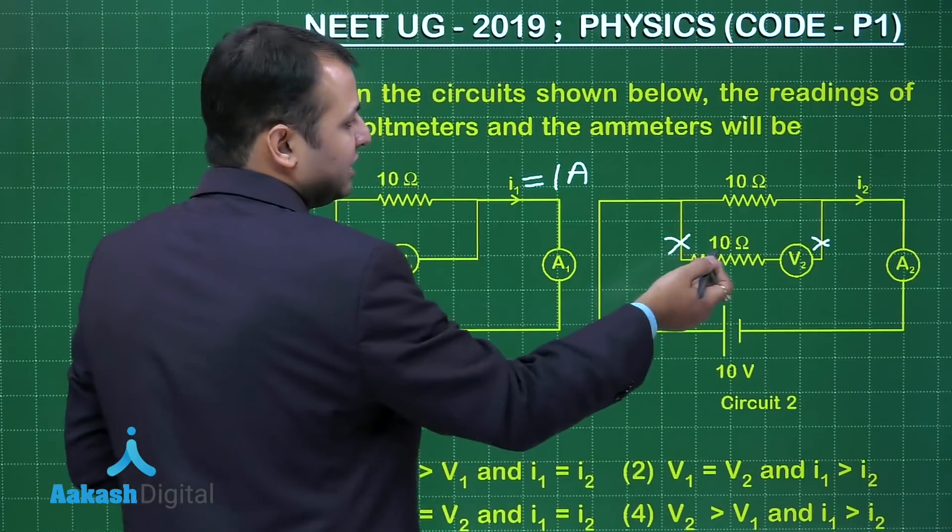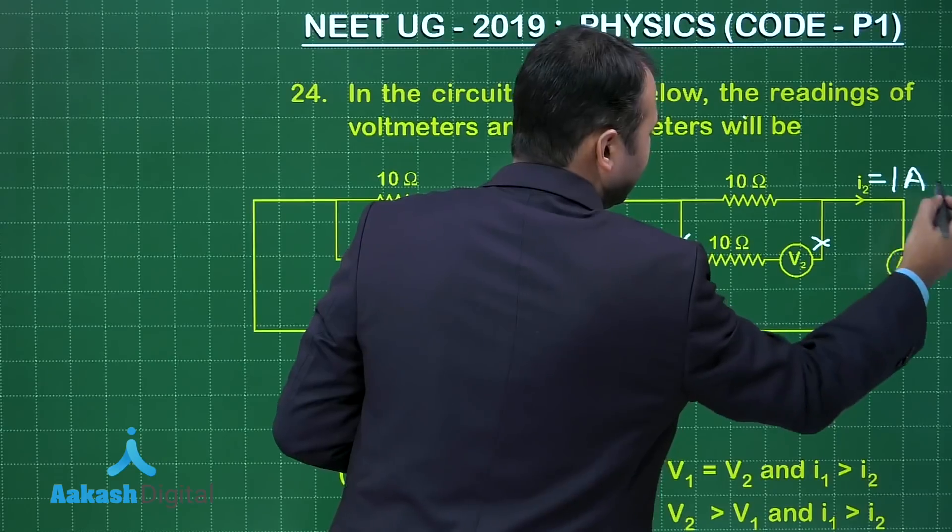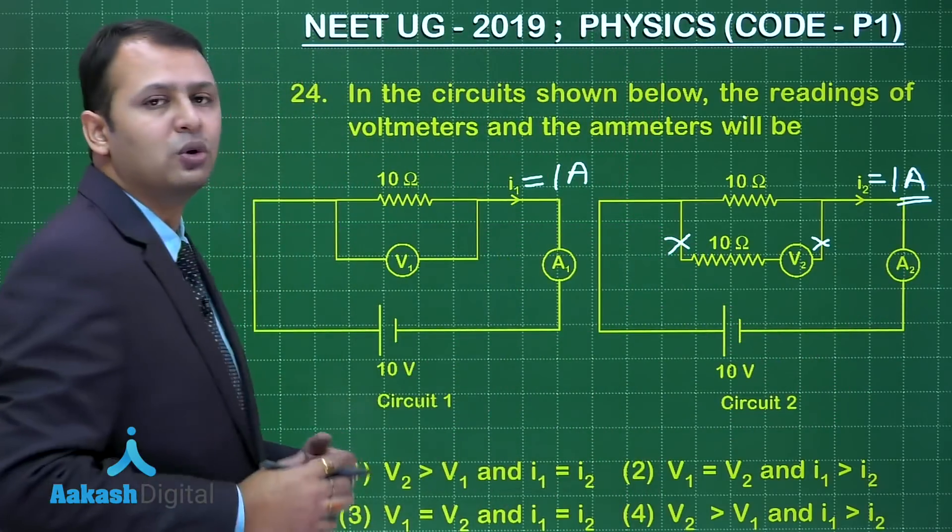Now again, in this case, the net resistance of this circuit is 10 ohm only. So current I2 will be equal to 1 ampere again. So I1 and I2 both will be equal.